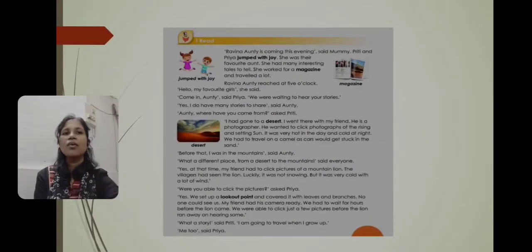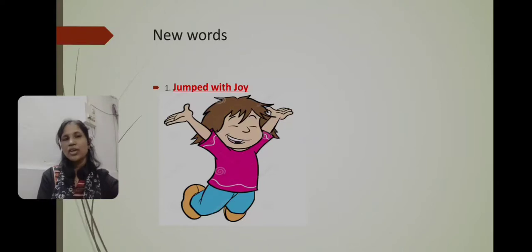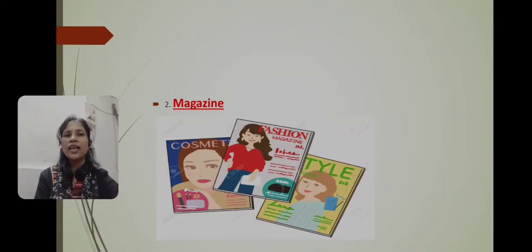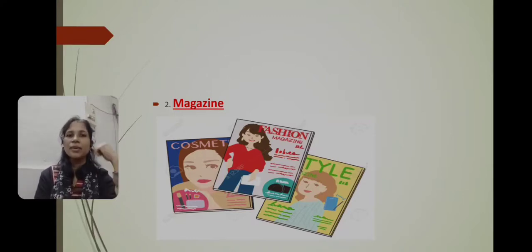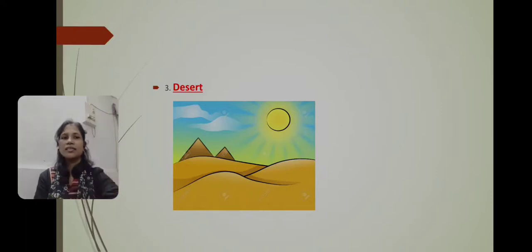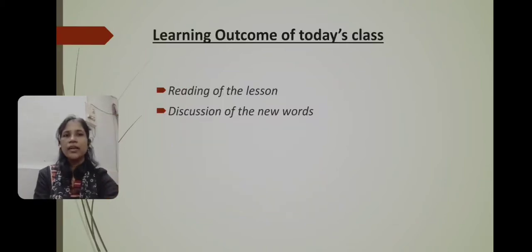Now let us discuss the new words. Number one: 'jumped with joy' — J-U-M-P-E-D, 'jumped', W-I-T-H, 'with', J-O-Y, 'joy'. As you can see in the picture, the child is very happy and jumping with joy. Number two: 'magazine' — M-A-G-A-Z-I-N-E. It is a book having different kinds of articles, stories, and pictures, as you can see in the picture. Number three: 'desert' — D-E-S-E-R-T. As you can see in the picture, it is a desert area with no trees, bright sunshine, and lots of sand.